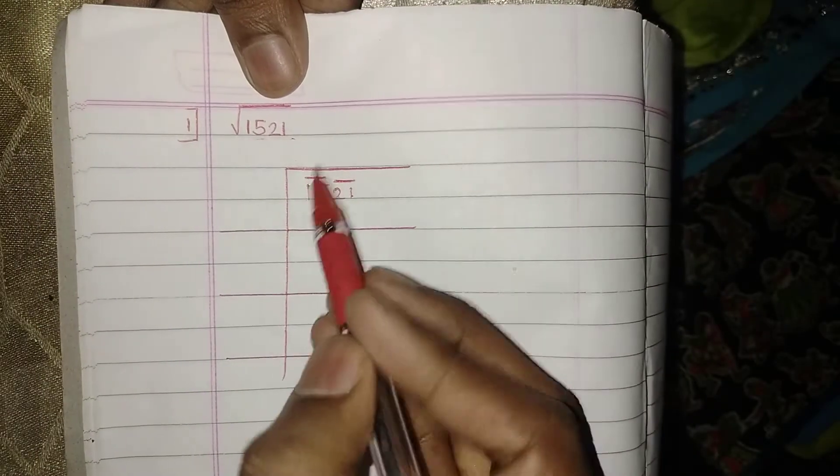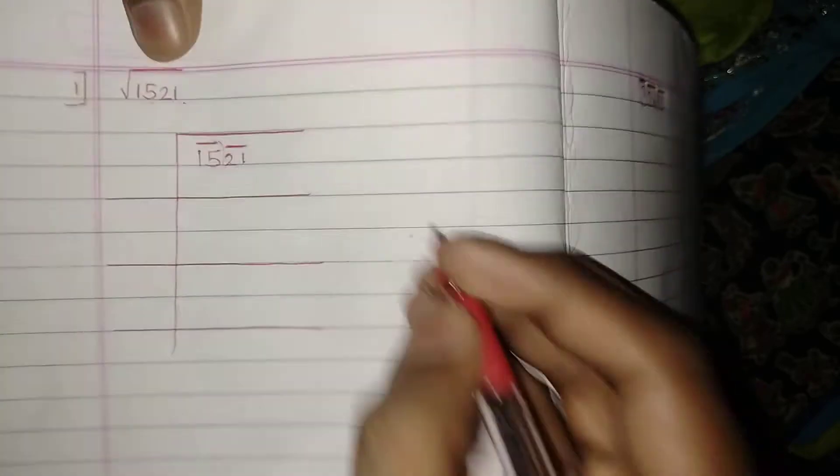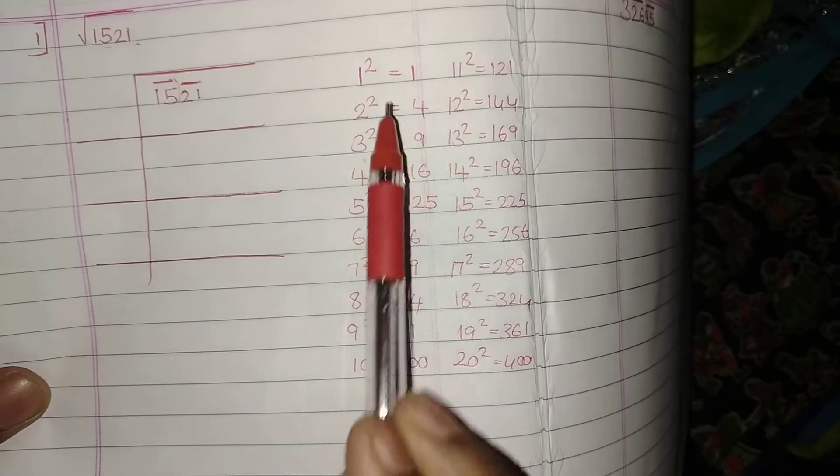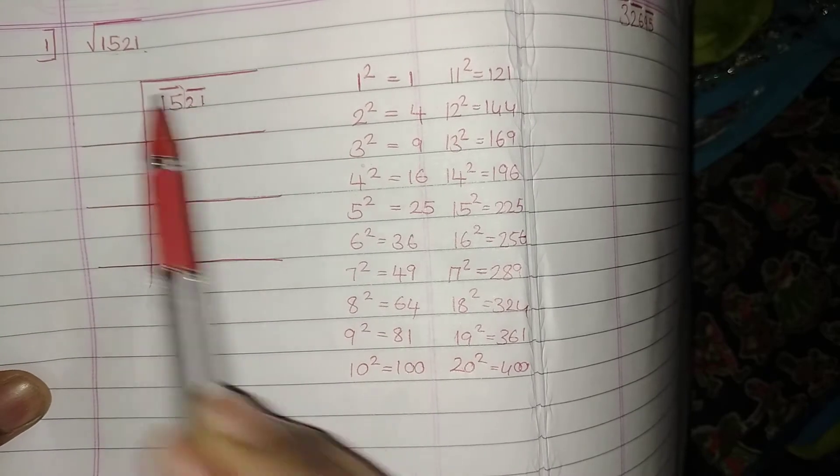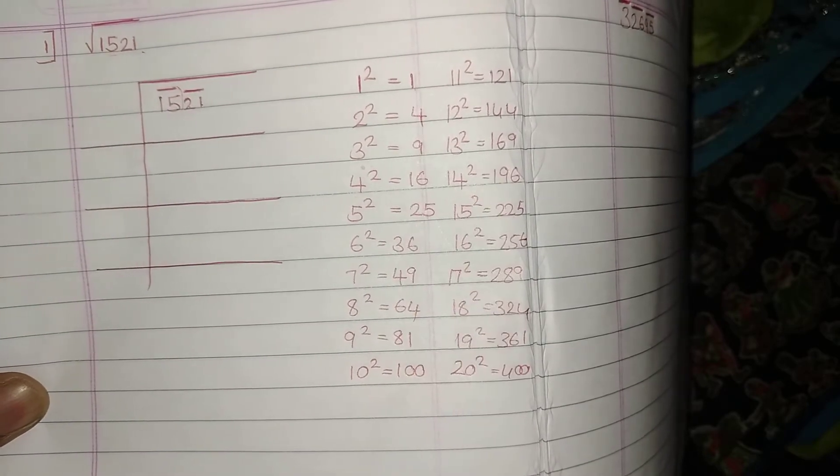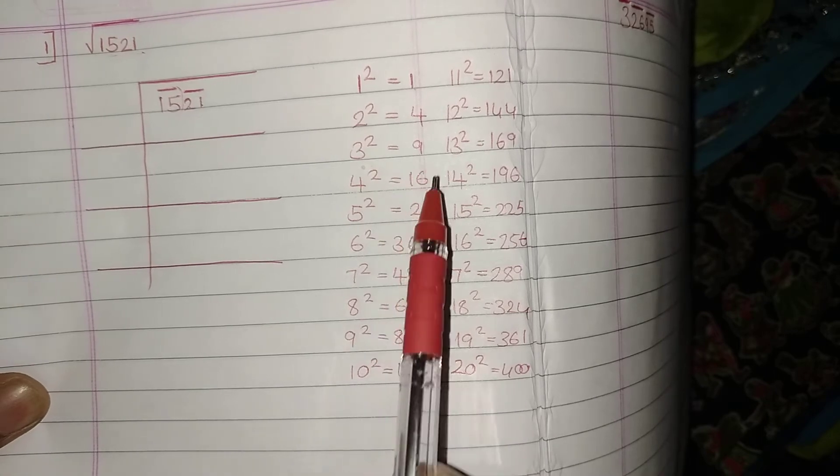Once we made a group, 15 is the first group, correct? So we need to check in what perfect square I am having a number called 15. Do I have 15 in any of the perfect square from one to twenty? No.